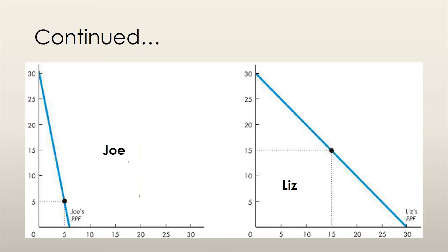On the graphs below, we can see Joe and Liz's production possibility frontiers. Joe can produce at any point on or inside his production possibilities frontier, and Liz can produce at any point on or inside hers as well. Neither of them can produce outside of their respective production possibility frontiers.